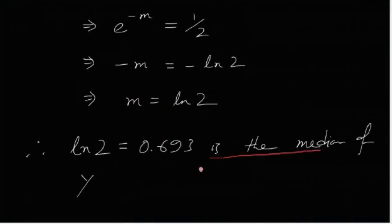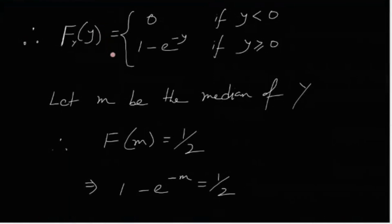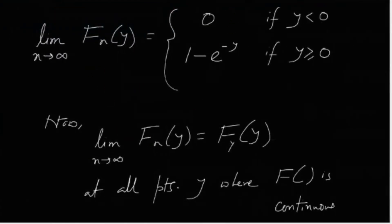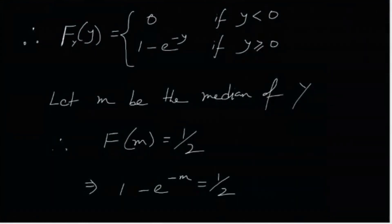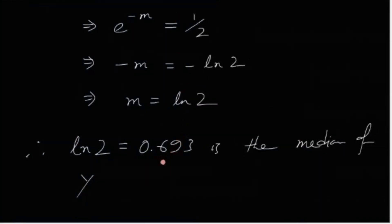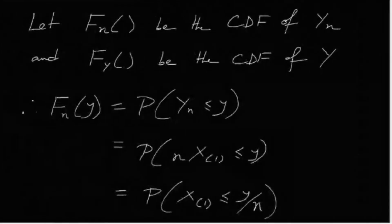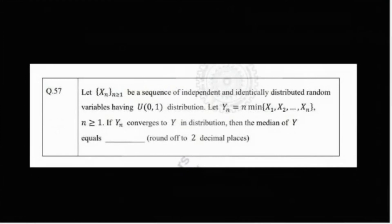So 0.693 is the median of Y. Once we found the distribution function of Fn and took the limit, we get the distribution function of Y, from which we can easily find the median. It was actually a very easy problem — the key step was finding the CDF of Yn, taking the limit, and then computing the median. Do like, share, and subscribe to the channel for more exciting problems. See you next time.